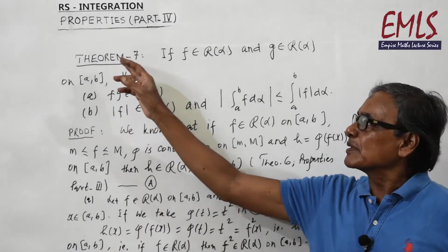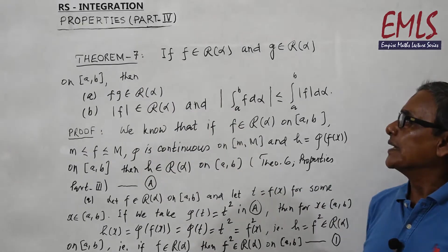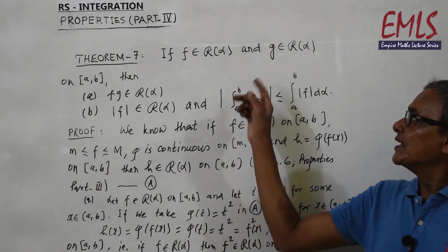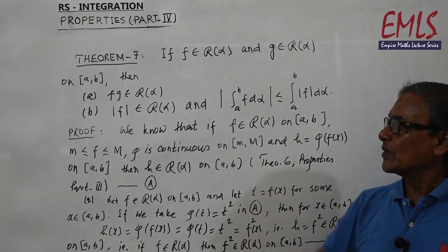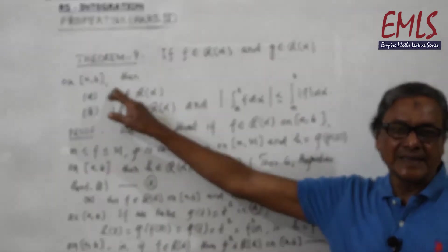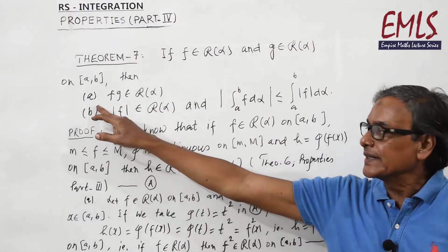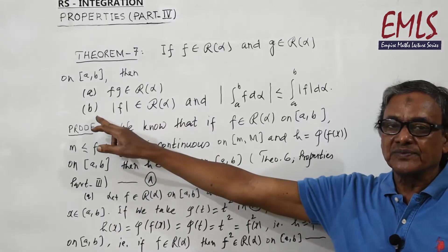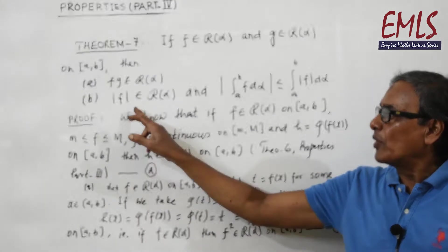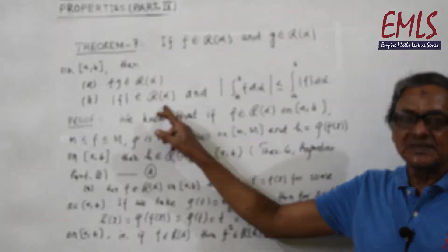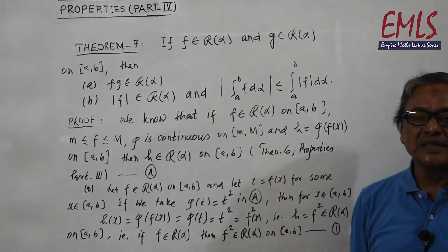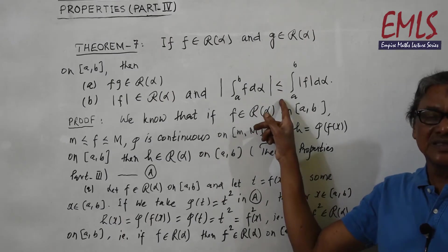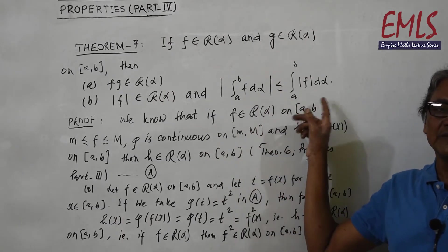The statement of theorem number 7: if f belongs to Rα and g belongs to Rα on closed interval [a, b], then (a) f·g belongs to Rα, (b) |f| belongs to Rα, and |∫_a^b f dα| ≤ ∫_a^b |f| dα.